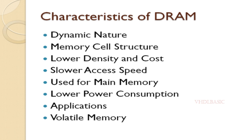Memory cell structure: the basic storage element in a DRAM cell is a single transistor and capacitor. The charge stored in the capacitor represents the binary value of the memory bit. Lower density and cost: DRAM cells are simpler in structure compared to SRAM cells, requiring only one transistor and capacitor. This makes DRAM more compact and less expensive to manufacture than SRAM.